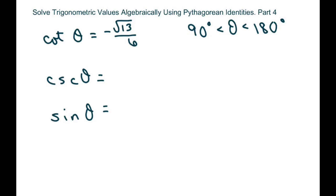Hi everyone. We're going to solve for these two trigonometric values given cotangent and the fact that we are in quadrant 2.